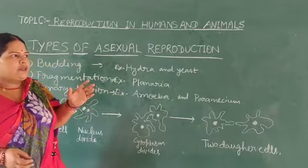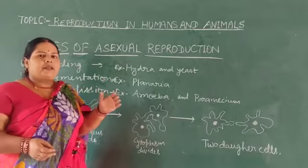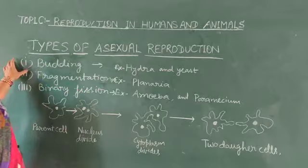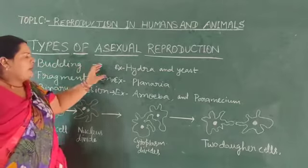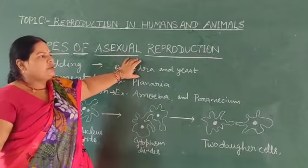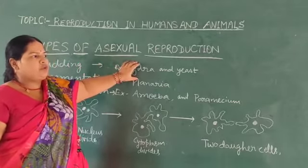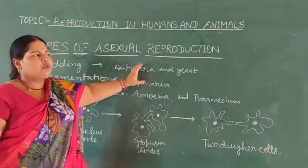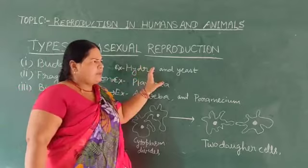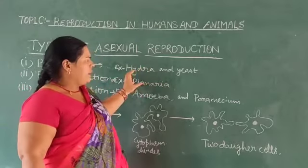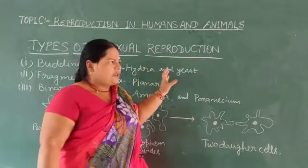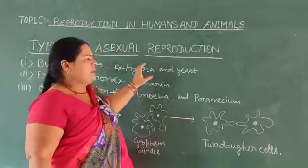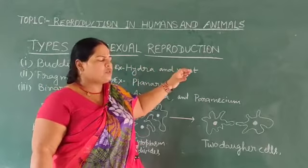In budding, as found in Hydra, a bud forms and is divided into different levels, then separated from the main portion, and the next new Hydra is prepared to reproduce.